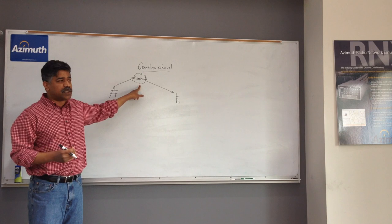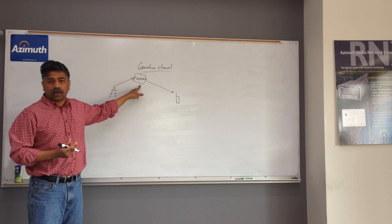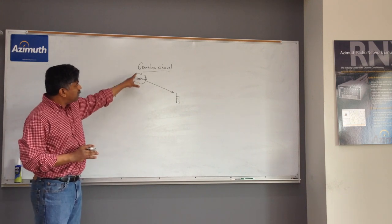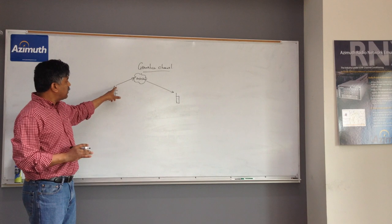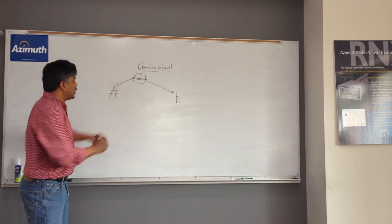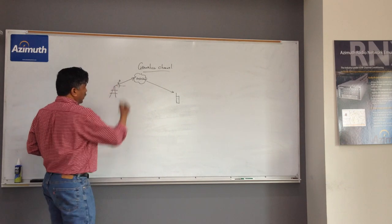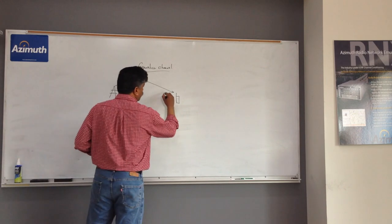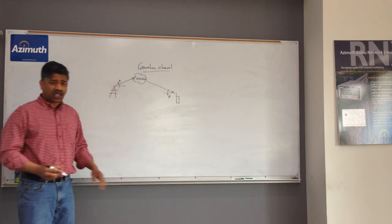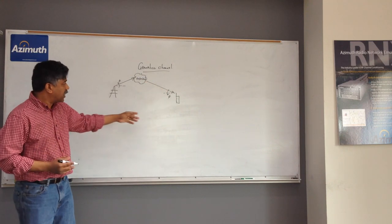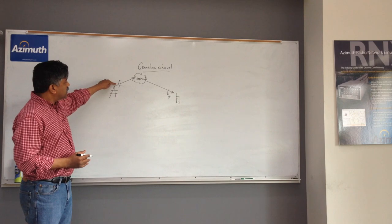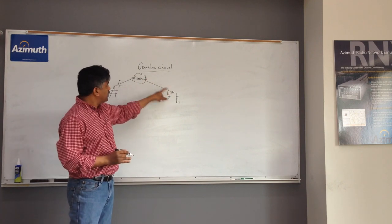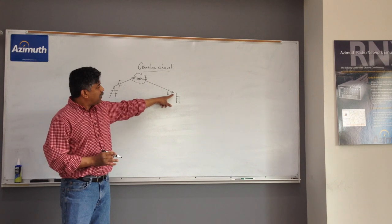Sometimes reflectors are referred to as scatterers, but they all serve the same purpose — they reflect the electromagnetic ray that impinges on them and deflect it in any direction. There could be multiple such reflectors affecting a given ray, but for the sake of argument, this one ray gets launched from the base station at angle theta, gets reflected by this nebulous cloud, and arrives at the receiver at some other angle phi in relation to some datum.